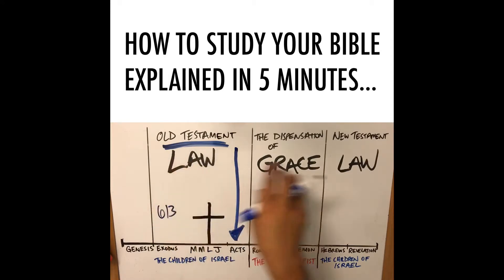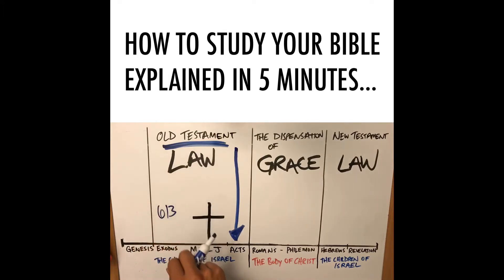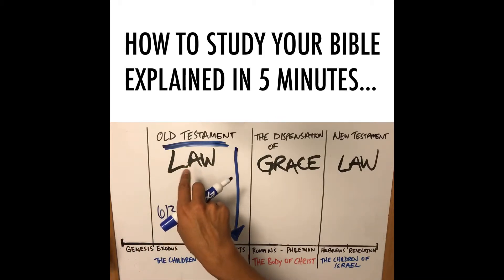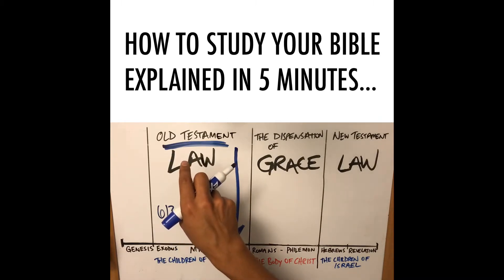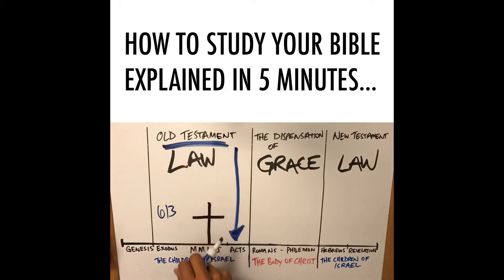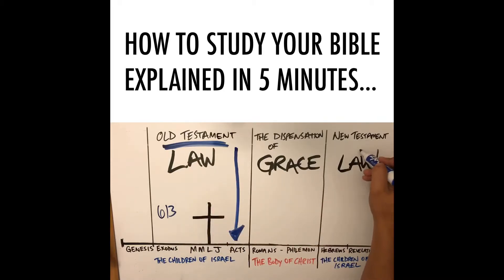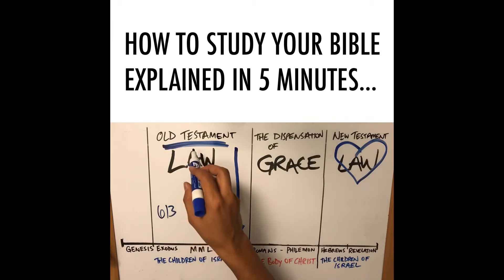We have the Old Testament and the New Testament. What you need to understand is in Jeremiah 31:31, the Lord said through the prophet Jeremiah, 'Behold, the days come where I will make a new covenant with the house of Israel.' That is going to be a day where they are no longer going to be under the law — God is going to put the law in their hearts and in their minds. Old Testament and Old Covenant are interchangeable.